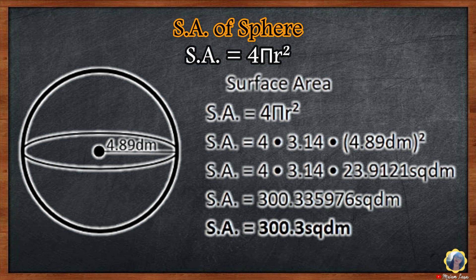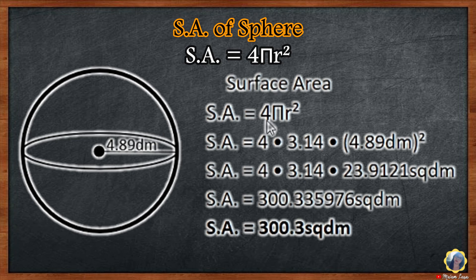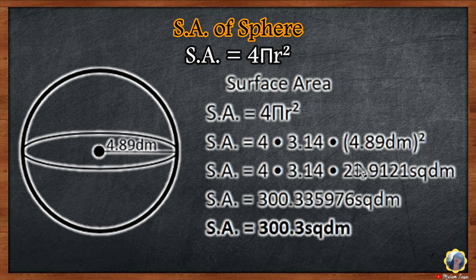Last is the surface area of a sphere. The formula is 4 pi r squared. The pi r squared part is the formula for the area of a circle. The reason it has 4 is because the total 4 areas of circles completely cover the surface area of a sphere of the same radius. So 4 times 3.14 times 4.89 decimeters squared equals 4 times 3.14 times 23.9121 square decimeters, which equals approximately 300.34 or 303.3 square decimeters.